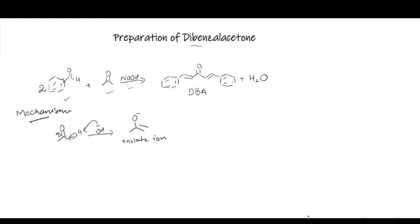This enolate ion is unstable and will quickly collapse back and react from its carbon with another carbonyl group present in the mixture. In the mixture we might have some acetone left unenolized at this stage, and we also have benzaldehyde, which by default is non-enolizable and will be present in its original carbonyl form. So this enolate has two options: either react with unenolized acetone and go for a self-condensation product, or react with benzaldehyde, which is non-enolizable and is still present in its carbonyl form.